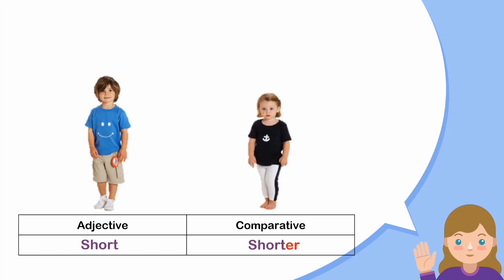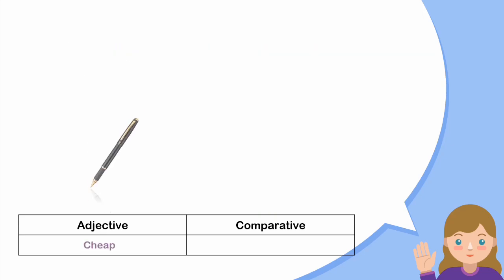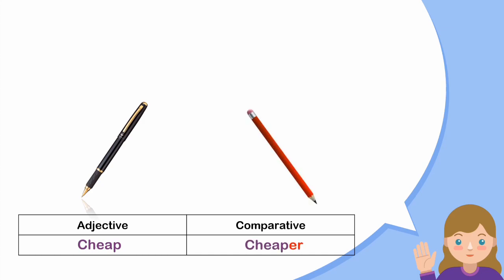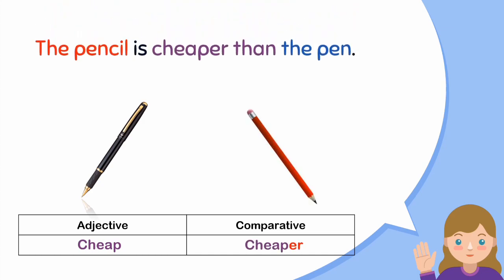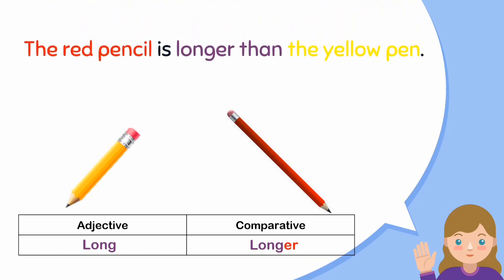'Short' (pendek) → 'shorter' (lebih pendek). Contoh: Zahra is shorter than Musa. 'Cheap' (murah) → 'cheaper' (lebih murah). Contoh: The pencil is cheaper than the pen.